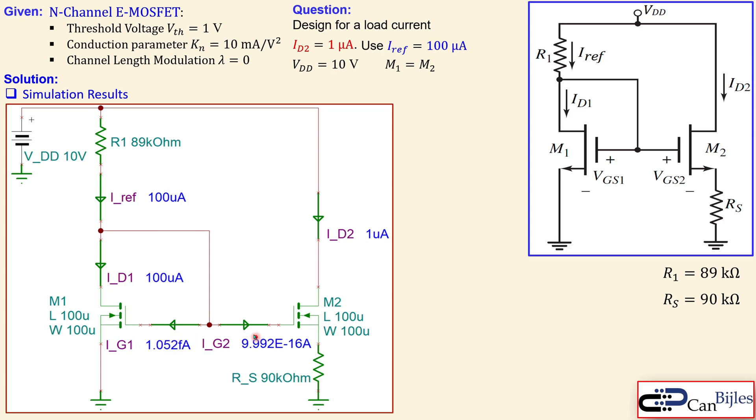That's because the gate currents are almost zero, very small. And ID2 here is one microamp as required. Remember, Iref is not equal to Iload or ID2 in this case because of this resistor here.